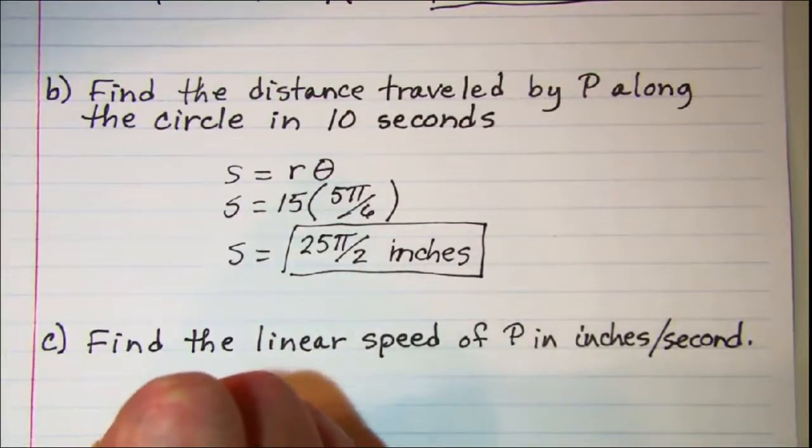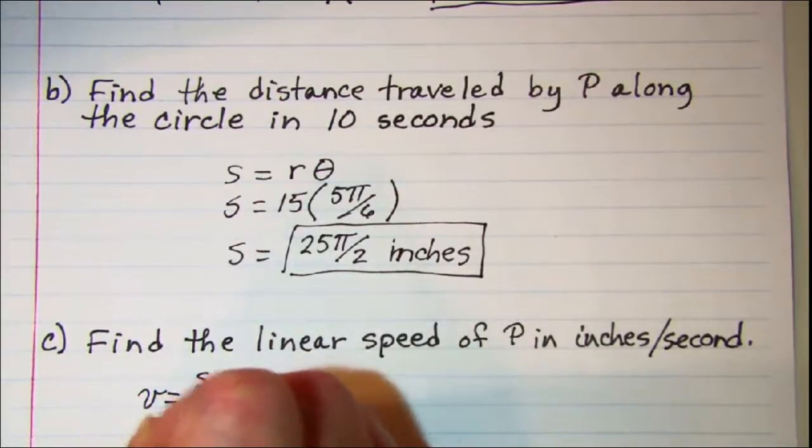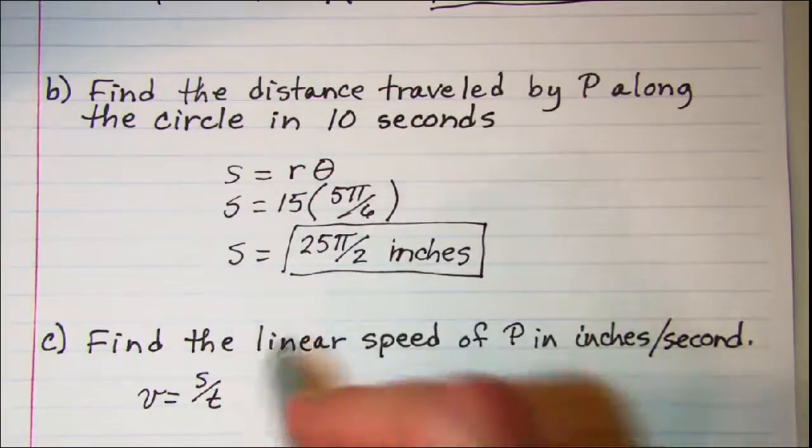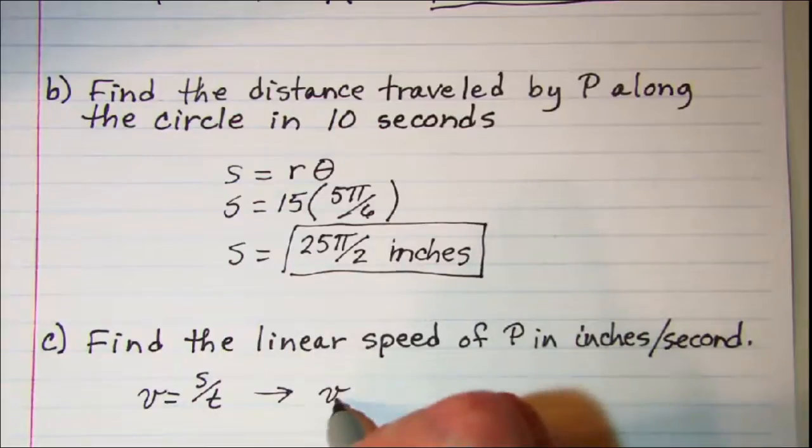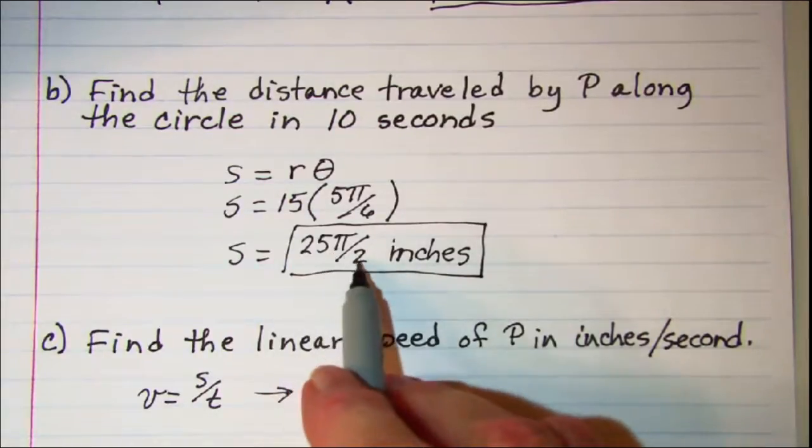If we use the formula v equals S over t we have the speed or the velocity is equal to 25π over